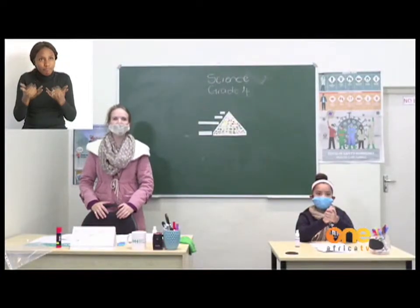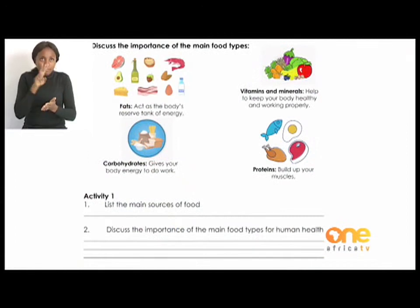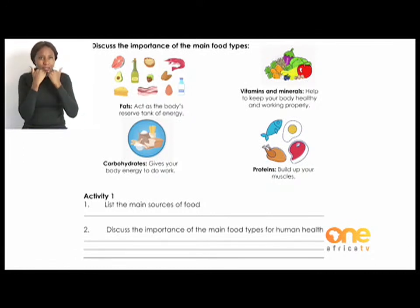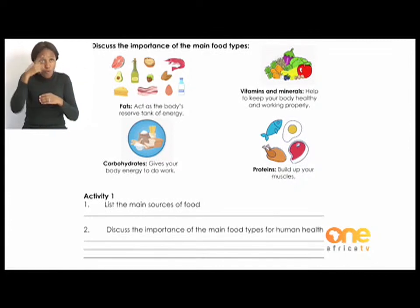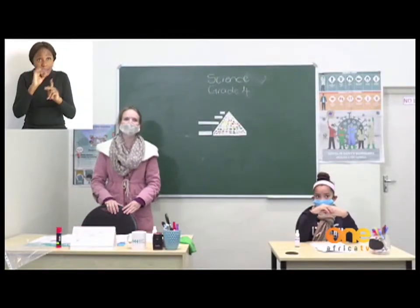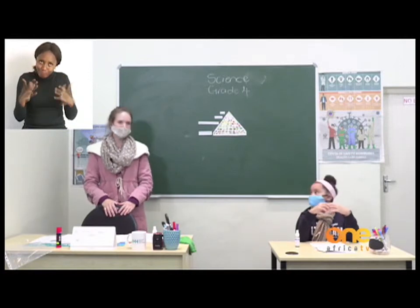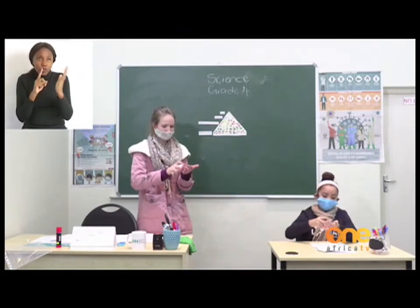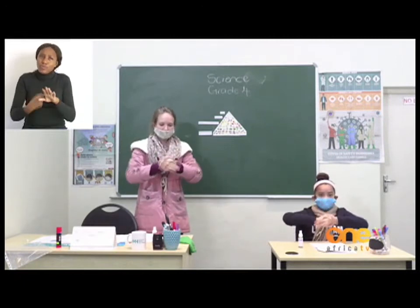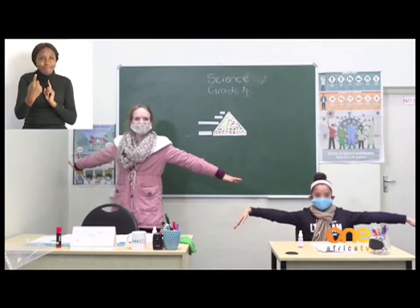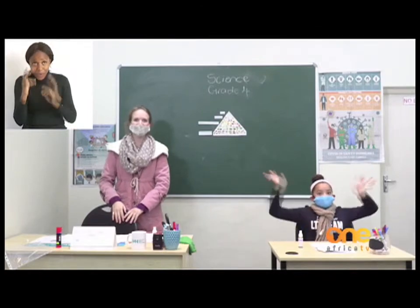Grade 4s, let's quickly take a look at our activity on page 12. There are two questions. Question one: list the main sources of food. Question two: discuss the importance of the main food types for human health. If you are done with that, you are done with science for today. Before we say goodbye, let's quickly sanitize. Kids all over Namibia, it's very important to sanitize and practice social distance. Thank you for listening, Grade 4s. Have a nice day. Bye!